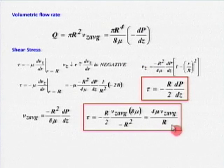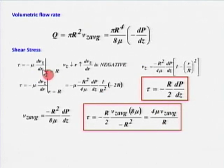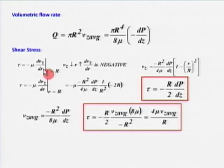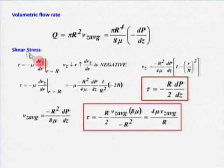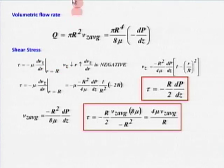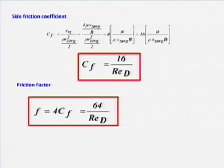Shear stress can be calculated by taking μ(dV_Z/dR), because we have the velocity profile. To get the shear stress, I need to know the velocity profile — only if I know the velocity profile can I do this differentiation. From that we get the friction factor.